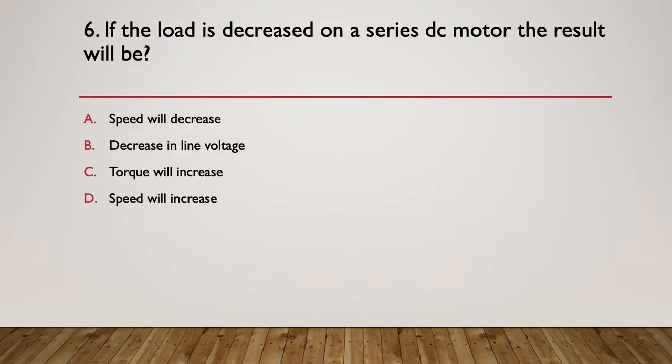Question seven: If the load is decreased on a series DC motor, the result will be what? A: The speed will decrease. B: A decrease in the line voltage. C: The torque will increase. Or D: The speed will increase. So what are the characteristics around a DC motor and what if we decrease the load? So again, list the characteristics for a series motor. Think about how it's connected and how it operates.